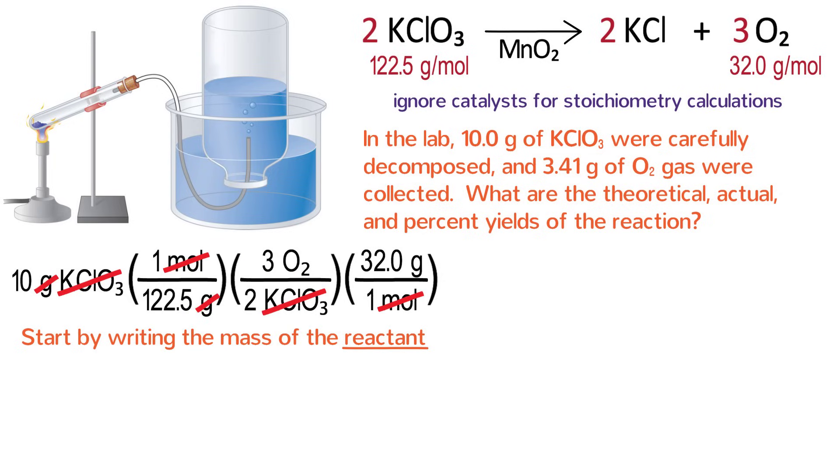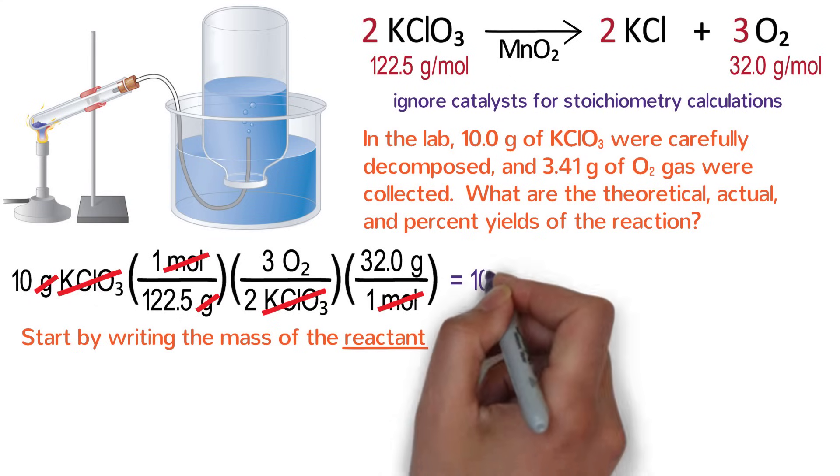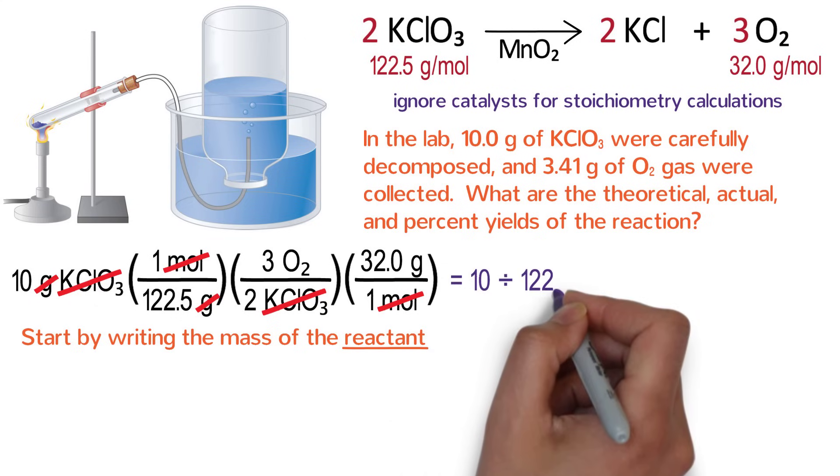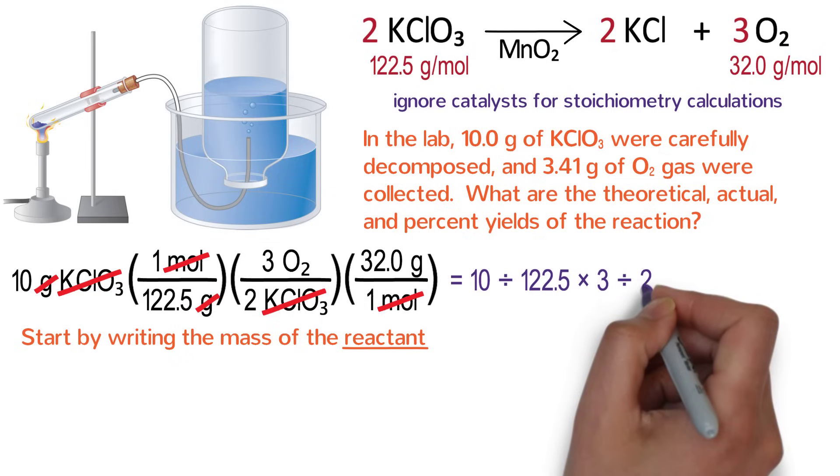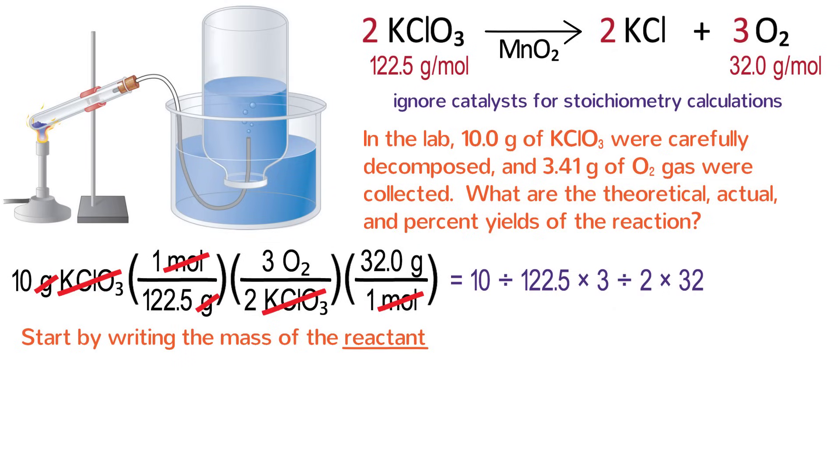To solve this problem, we move from left to right, always multiplying by numbers on the top of fractions and dividing by numbers on the bottom of fractions. In your calculator type 10 divided by 122.5 times 3 divided by 2 times 32 and the answer is 3.92 grams of oxygen. This number is the theoretical yield. It is the amount of product that we should make if everything worked perfectly. It is the maximum amount of product that we can make from the amount of reactant we started with.